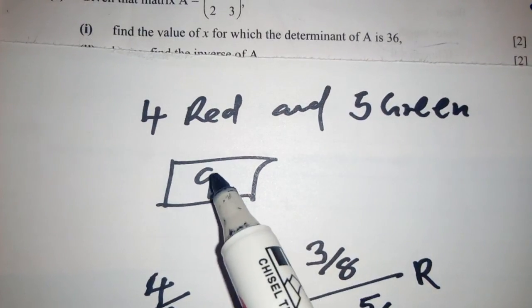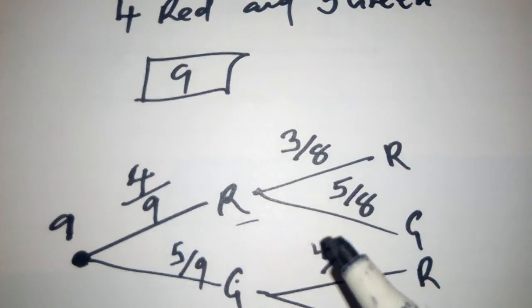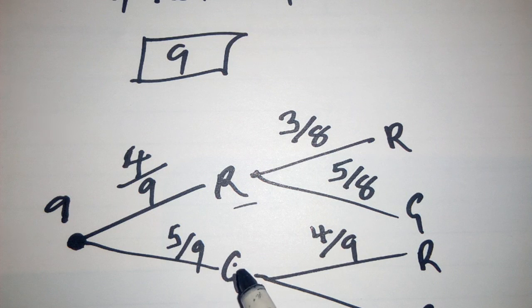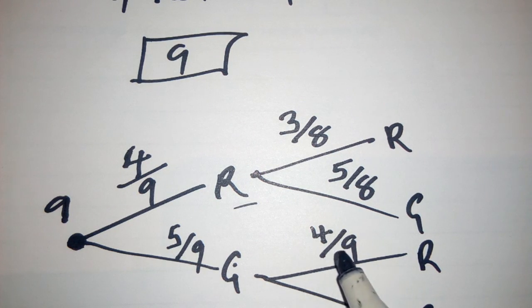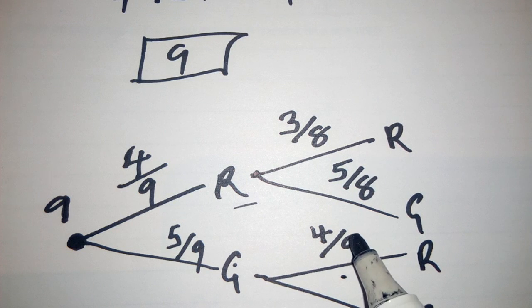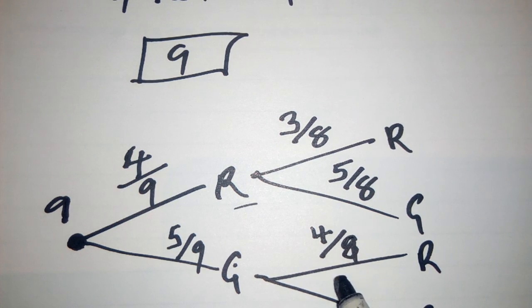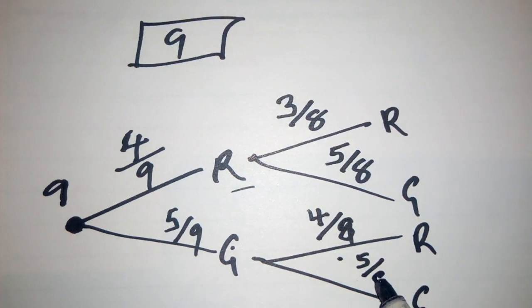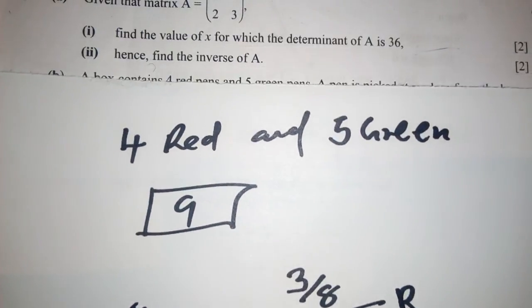And this red will be the total number of red, which is 4, because in the first round, red was not picked. If green was picked in the first round, in the second round, the probability of picking green is 4 over 8. So we are done there.